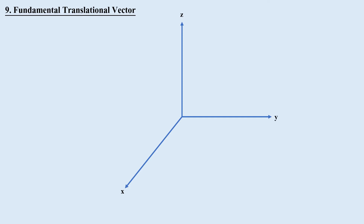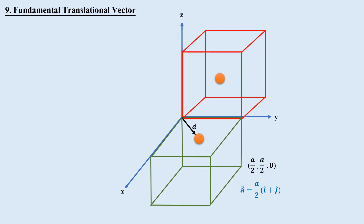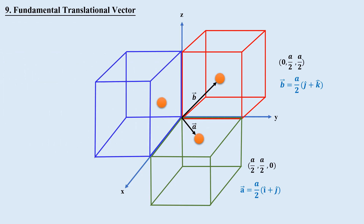Fundamental Translational Vectors: To write the fundamental translational vectors of FCC, we need three cubes. The first vector, A, is calculated from the cell placed in the xy-plane; the coordinates of its face-centered atom are (a/2, a/2, 0), so A = (a/2)(î + ĵ). The second vector, B, is from the cell in the yz-plane; coordinates are (0, a/2, a/2), so B = (a/2)(ĵ + k̂). The third vector, C, is from the cell in the xz-plane; coordinates are (a/2, 0, a/2), so C = (a/2)(î + k̂).